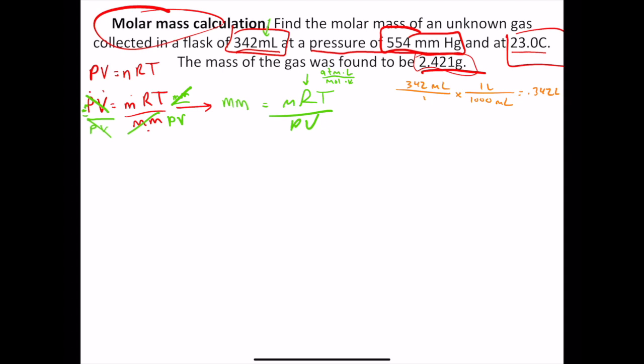All right. Next up is the pressure. So we have to do a pressure conversion here. 554 millimeters of mercury. All right. What's the conversion factor for millimeters of mercury? Yeah, good. 760 millimeters of mercury over or under. What would go on the top here? What's our standard? What are we looking for? Yeah, exactly. One ATM. All right. And then when we plug this in, it's 554 divided by 760. And that's going to give us 0.729 because we're going with three sig figs. 0.729 ATM.